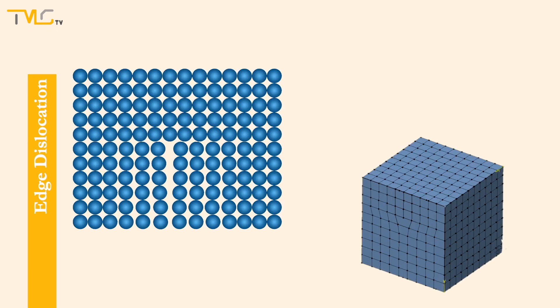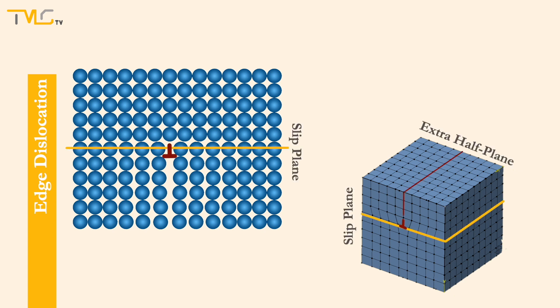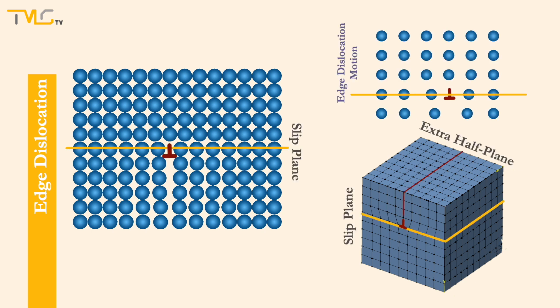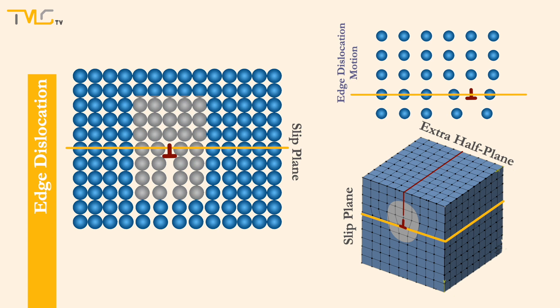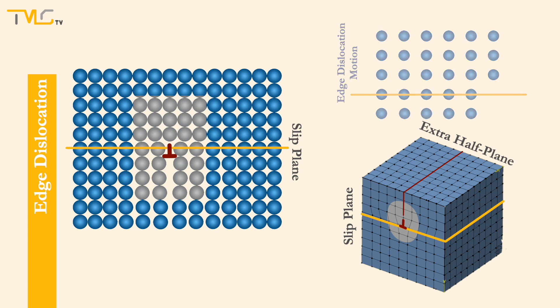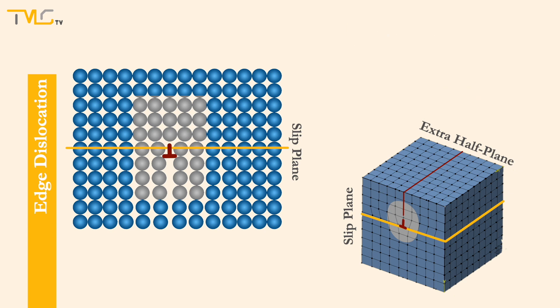Here in this example, you can see an edge dislocation, where only a half plane of atoms has ended inside the crystal and could not move throughout it. The location where it ends is called a dislocation line. For edge dislocations, the dislocation line is perpendicular to the crystal plane that we see in the figure. This extra half plane of atoms causes some distortion around it. Above the dislocation line, atoms get closer to each other, and below it, they move further apart.